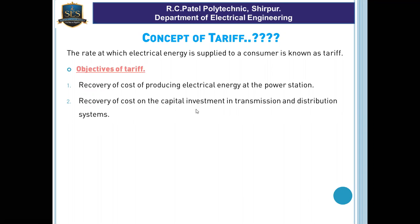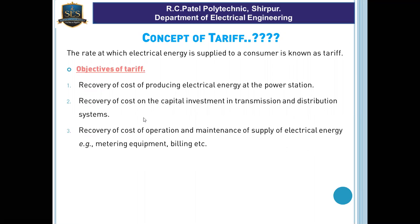Recovery of cost of capital investment in the transmission and distribution system. When there is equipment like transformers, generators, etc., these are the main equipment. For the recovery of that capital, we apply the tariff. Operation and maintenance cost is also included in the tariff structure.